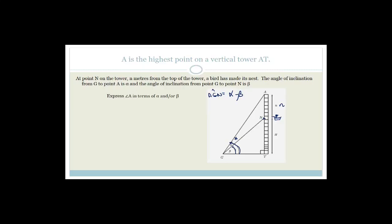Now express angle GAN in terms of α. In the big triangle AGT, we have angle α at G and a right angle (90°) at T. So angle A = 180° − (90° + α) = 90° − α. Therefore this angle is 90° − α.